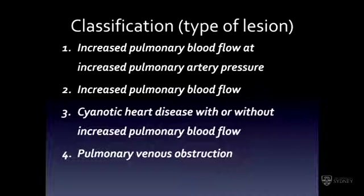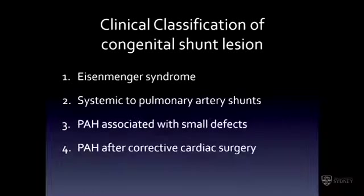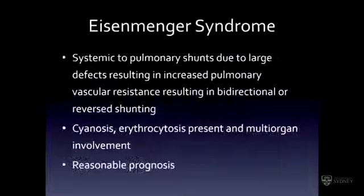The last group, which we don't see much in adulthood, is patients with pulmonary venous obstruction — such as total anomalous pulmonary venous connection with obstruction, or hypoplastic left heart — who develop secondary pulmonary hypertension. We don't see it in adulthood because those with severe pulmonary hypertension don't survive that long. The group we most commonly see in adulthood are those with shunts, and I'll spend most of my talk on those patients.